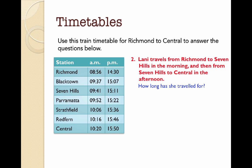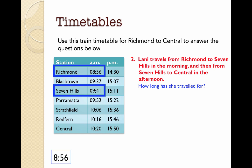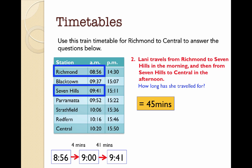Let's look at the second question. A girl named Lani travels from Richmond to Seven Hills in the morning and then from Seven Hills to Central in the afternoon. The question is: how long has she traveled for? From 8.56 to nine o'clock is four minutes, and from nine o'clock to 9.41 is 41 minutes. So in the morning she's traveled for 45 minutes.